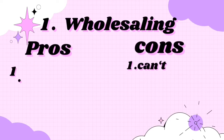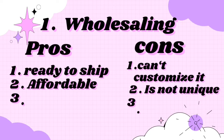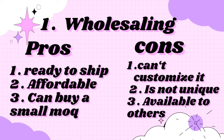The first advantage with wholesaling is that it's usually ready to ship. All you have to do is place an order and in a couple of days or maybe a week, you will get your order — no wait. The second advantage is affordable prices. You can find a lot of palettes that are under $5, and you can get like 20 of them, which is a good price if you're starting out and don't want to invest too much.